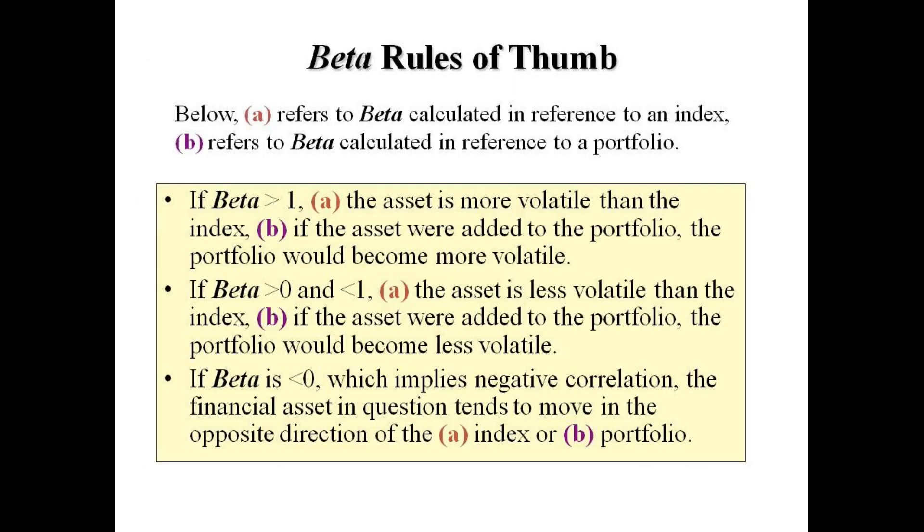These are the beta rules of thumb: If the beta is greater than 1, the asset is more volatile than the index, and if you're comparing to a portfolio, adding the stock would make the portfolio more volatile. If the beta is between 0 and 1, the asset is less volatile than the index, and adding it would make the portfolio less volatile. If beta is negative, which implies negative correlation, the financial asset moves in the opposite direction of the index or portfolio.